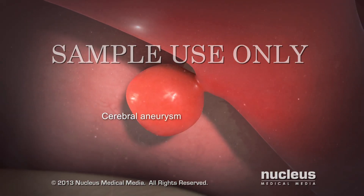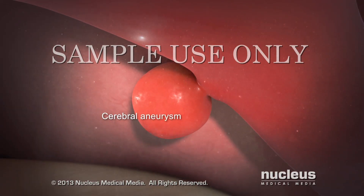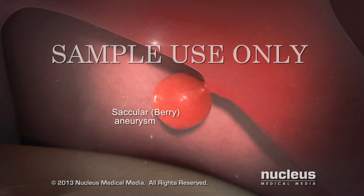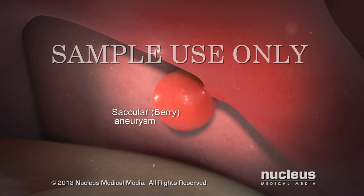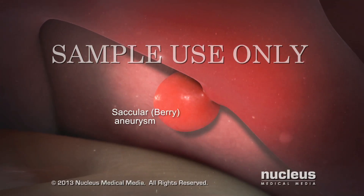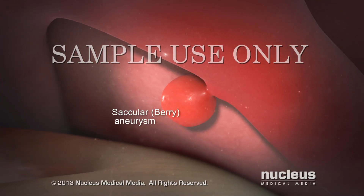The constant blood pressure can cause the weak spot to balloon out and form a bulge, called a cerebral aneurysm. This cerebral aneurysm is the most common type, called a saccular or berry aneurysm.